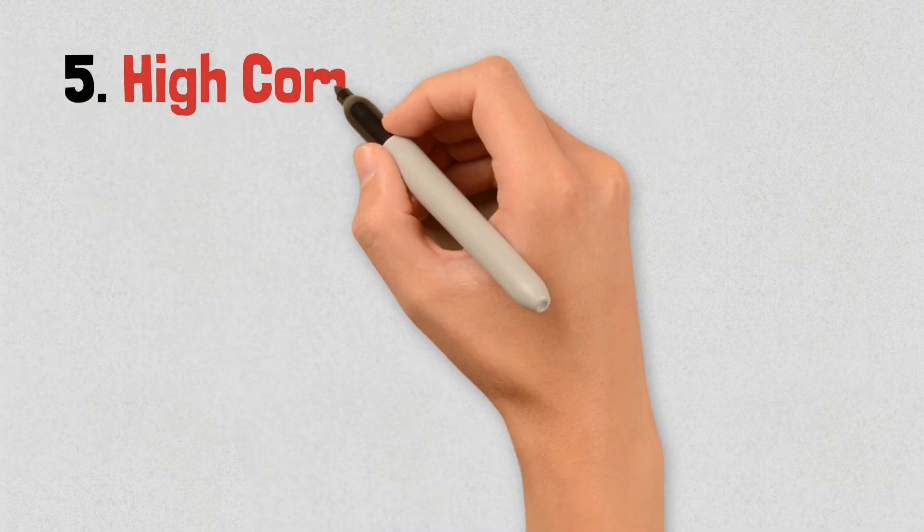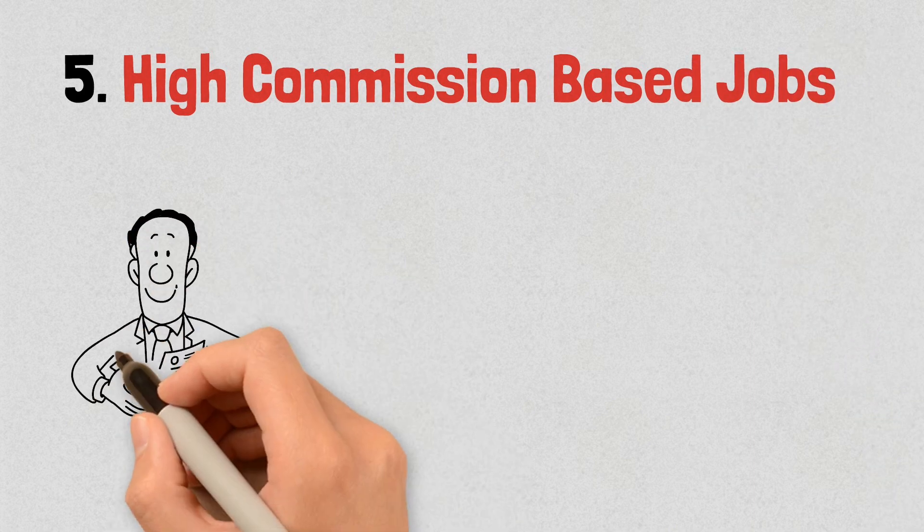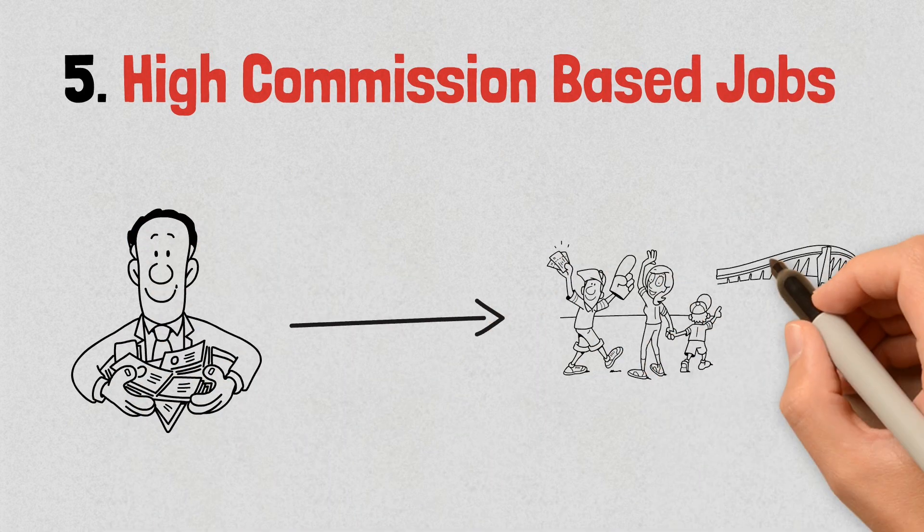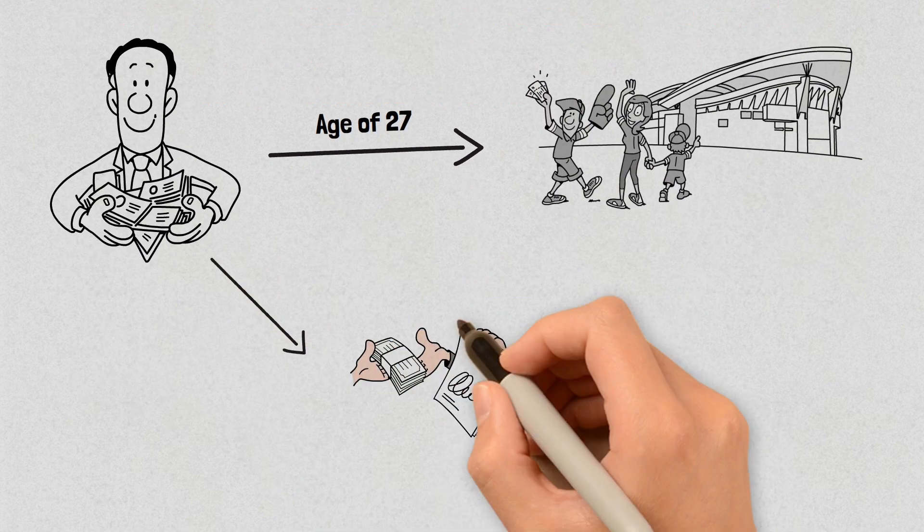The fifth way people made their first one million was through high commission-based jobs. One of the millionaires who answered got employed by a sports and media agency at the age of 27 and became a sports agent working on commission.